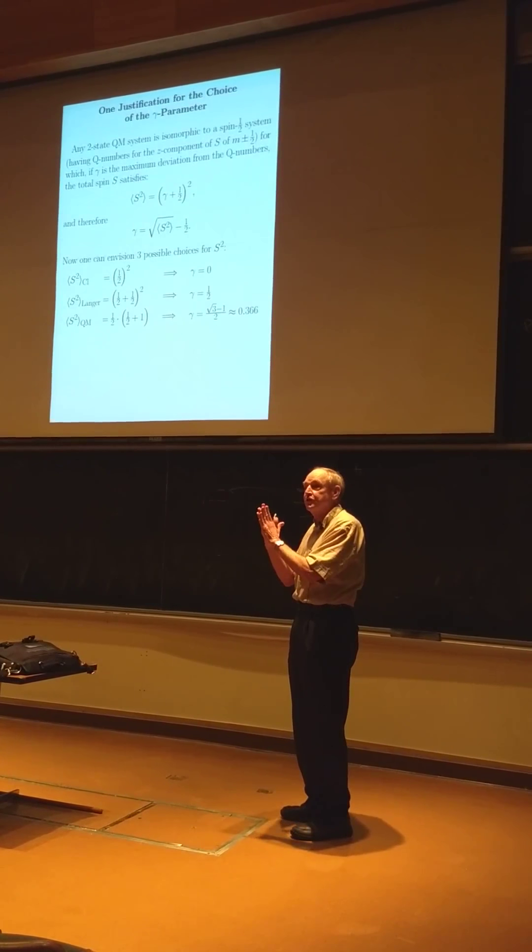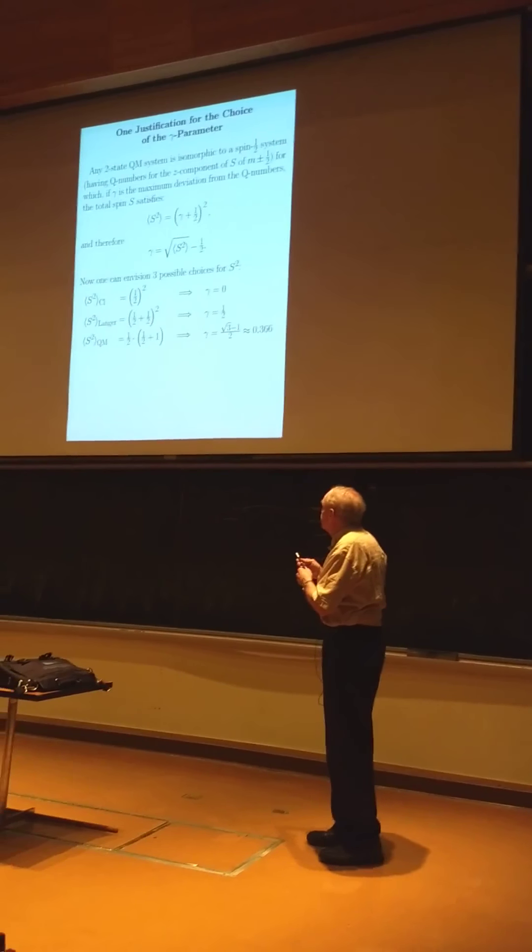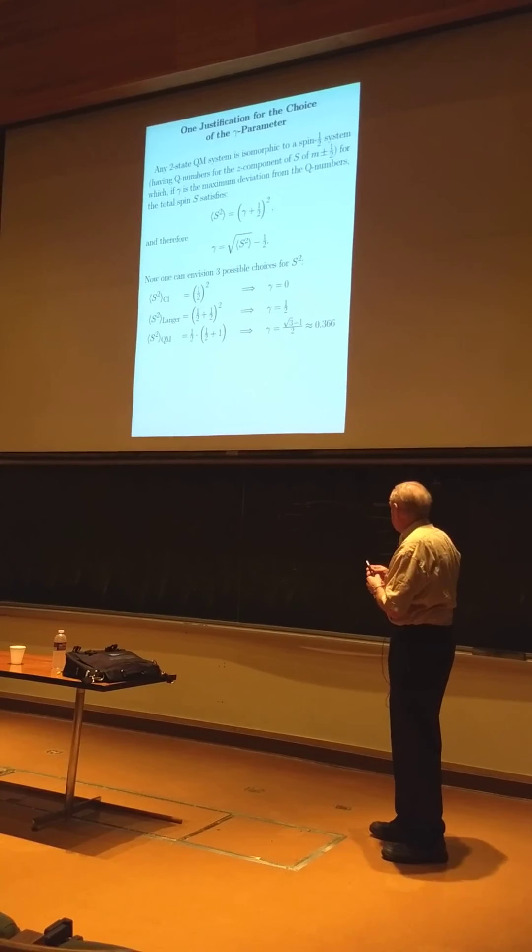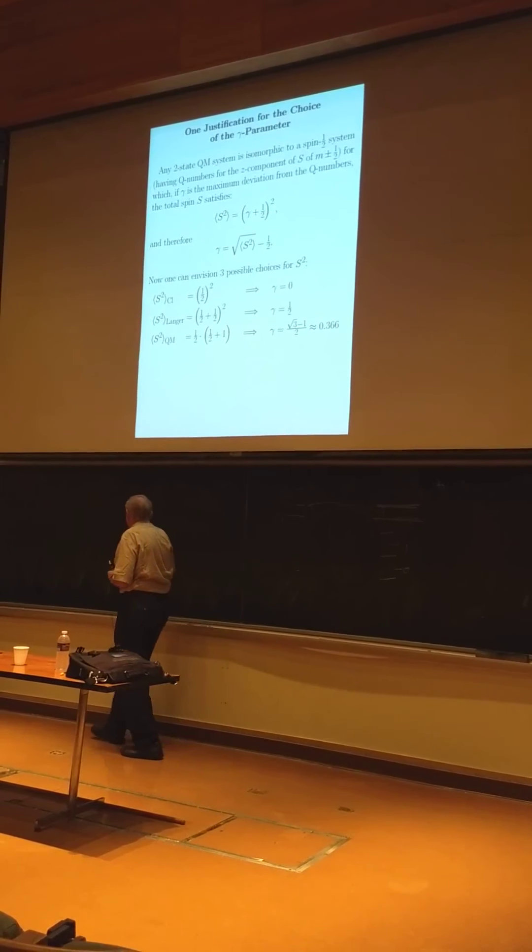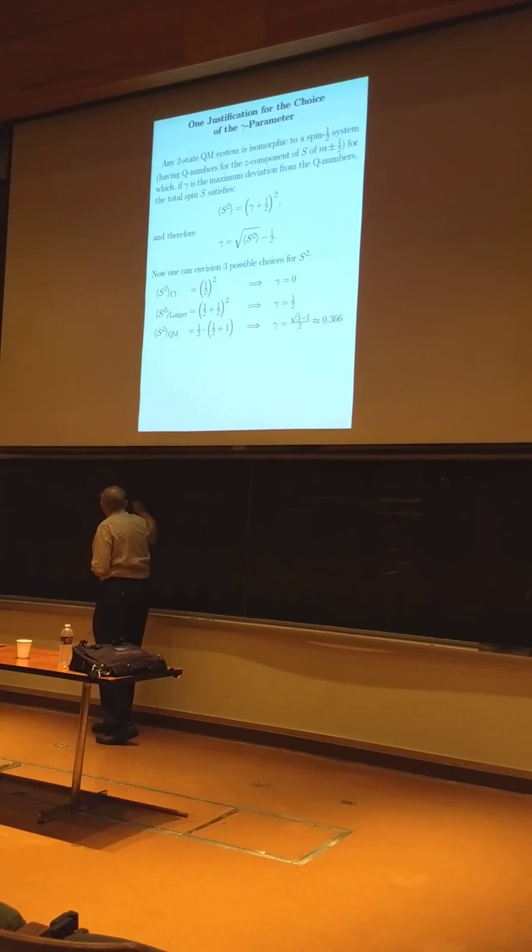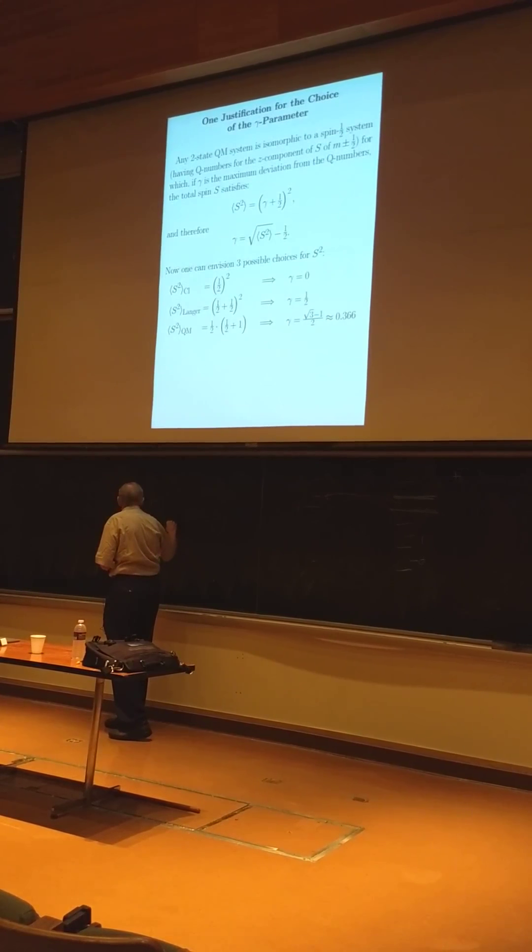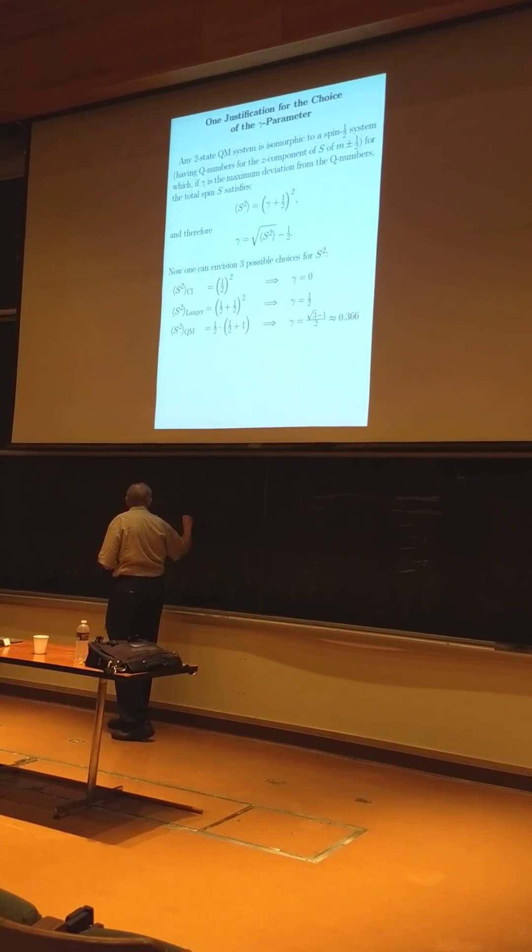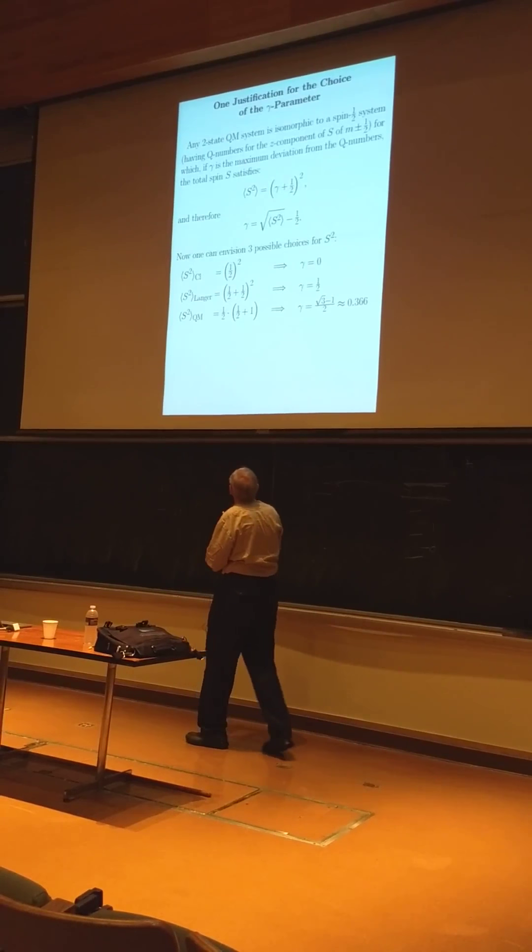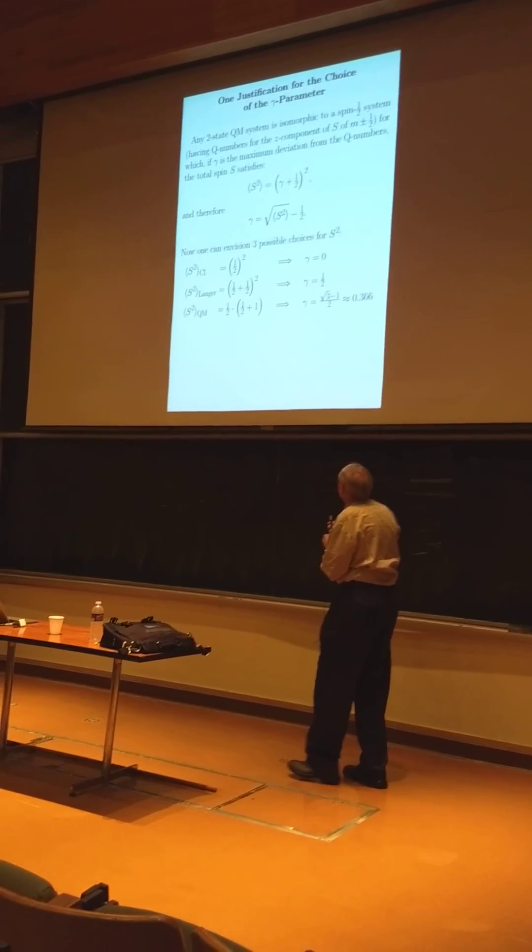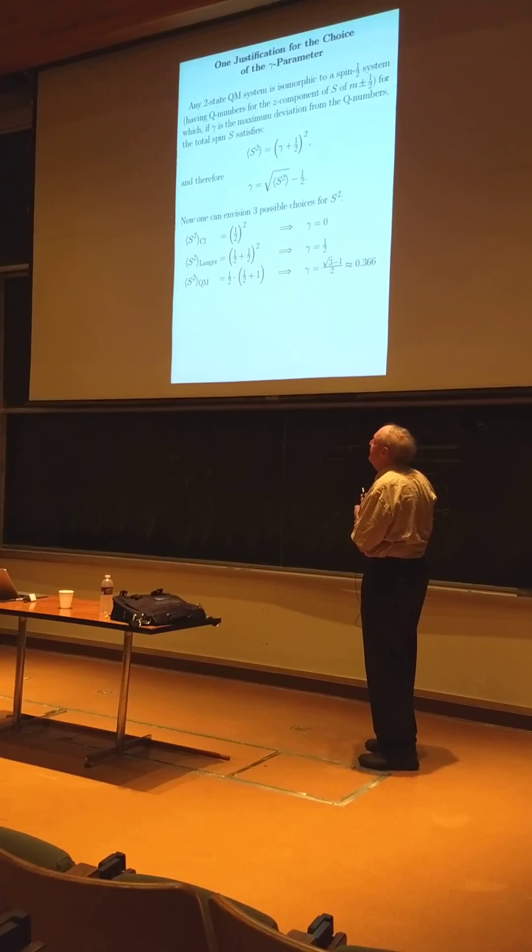So what are the possibilities that come to mind? Well, totally classically, for spin one-half s-squared is a half-squared. And then the square root of that is a half. So that's, again, the zero. That's when you shrunk to the delta function. And that is correct, totally classically, but not useful. There's this so-called Langer correction.